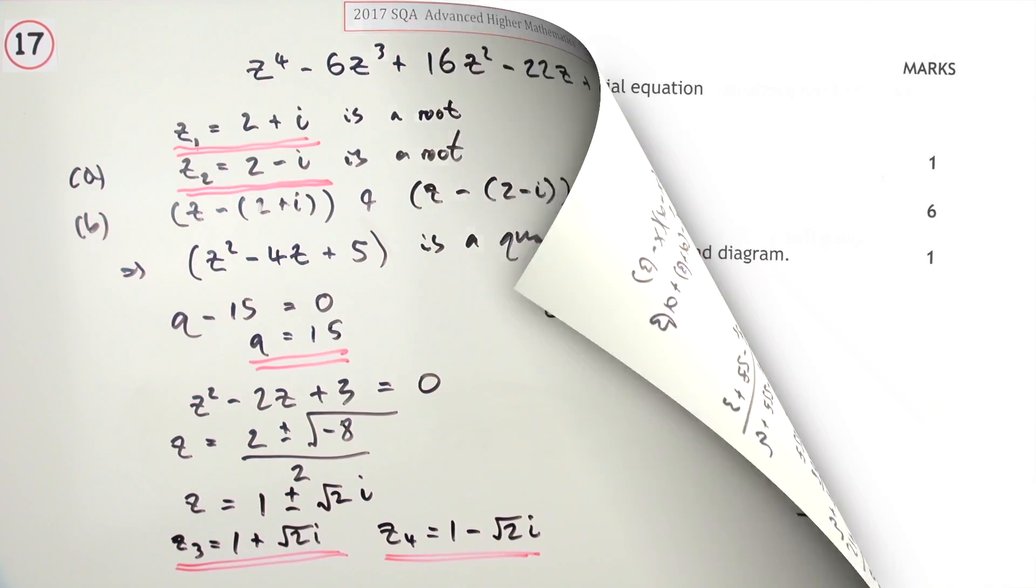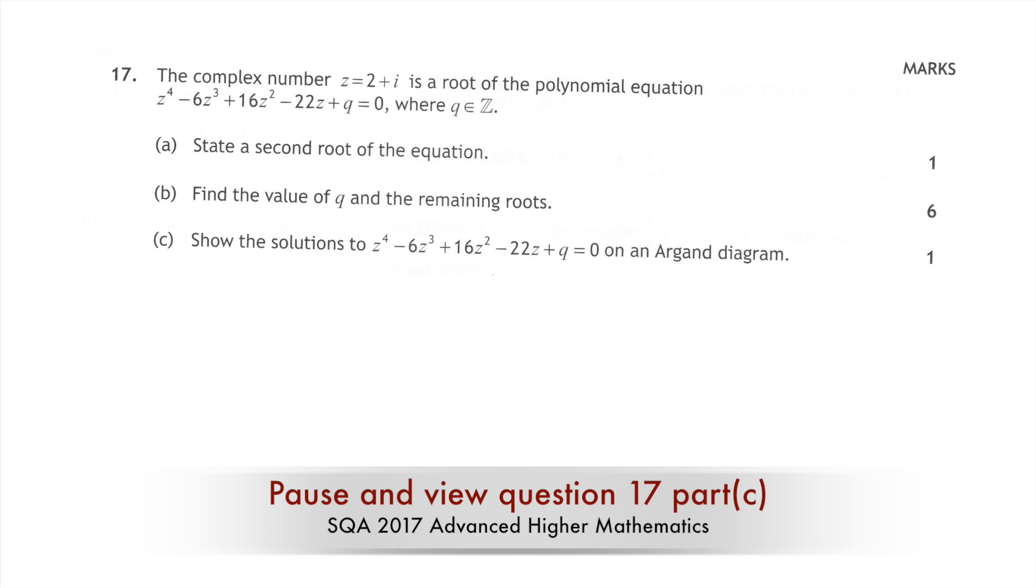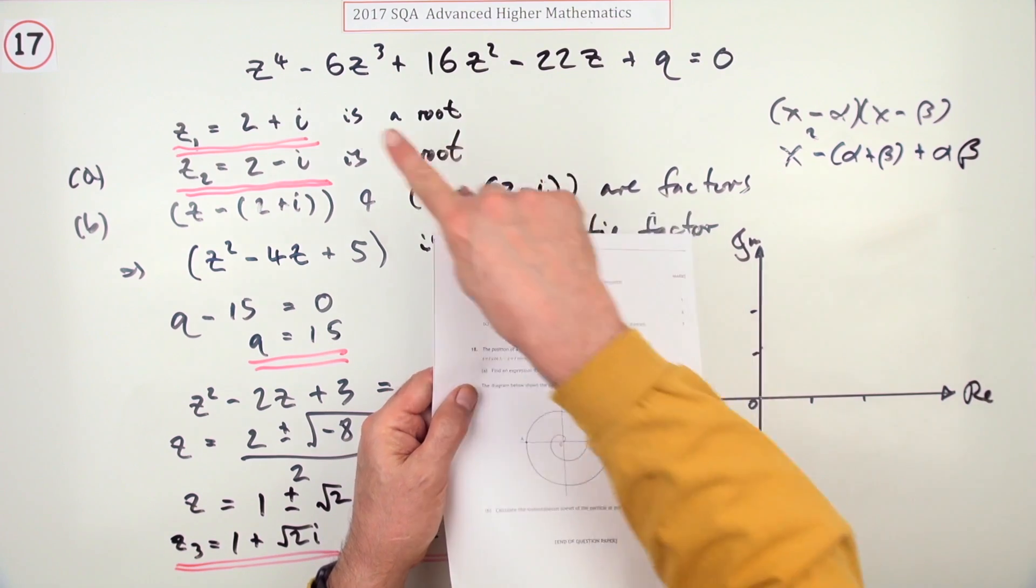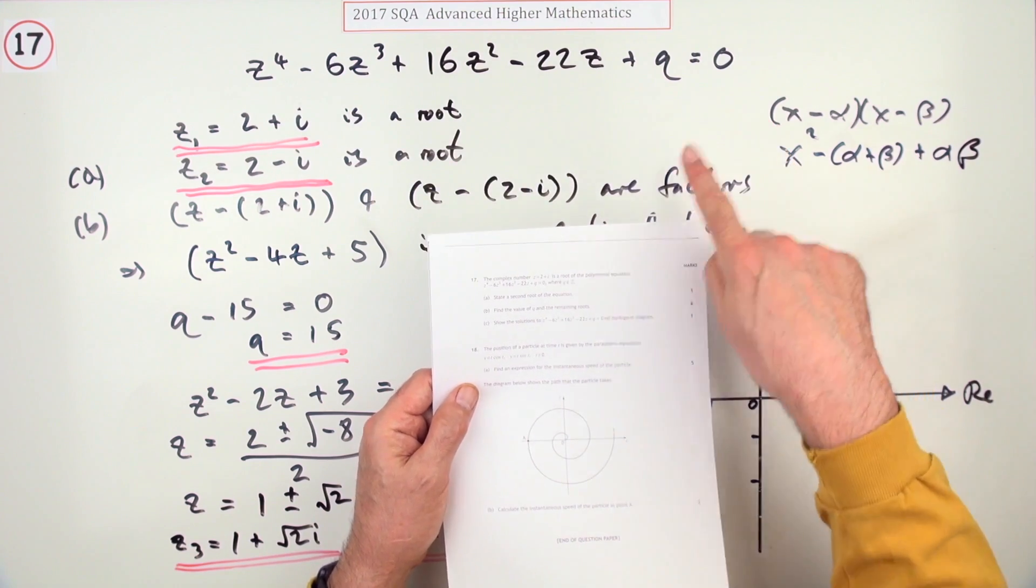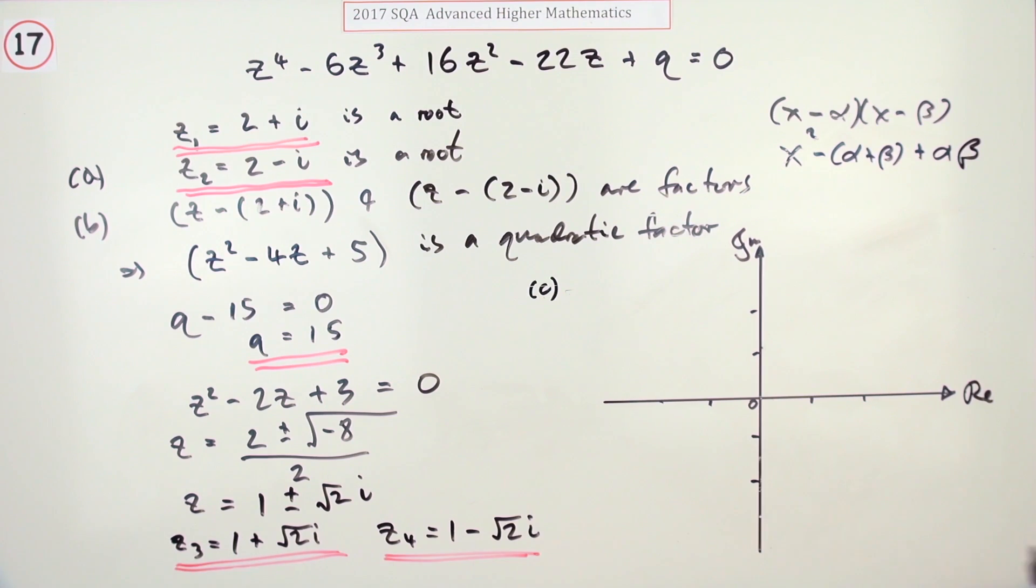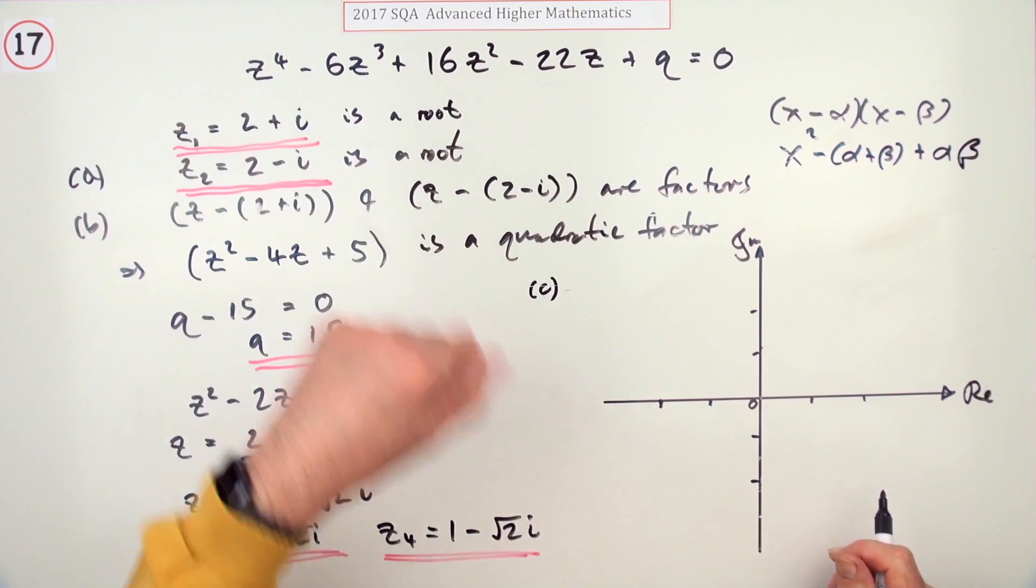Part (c), for one mark: show the solutions to this polynomial equation on an Argand diagram. Show these four solutions. These are in rectangular form, so plot them rectangularly.